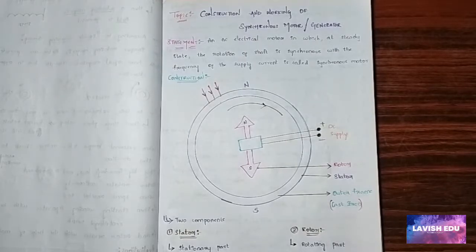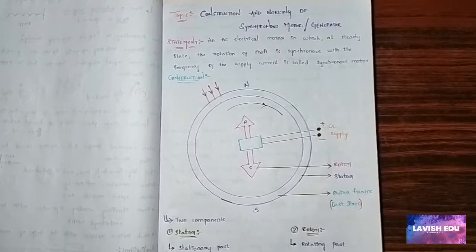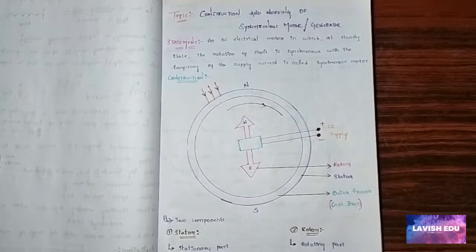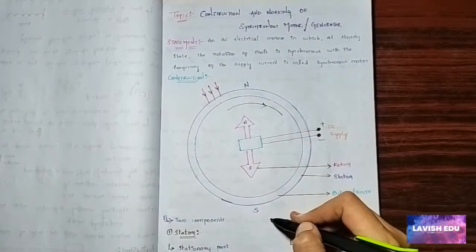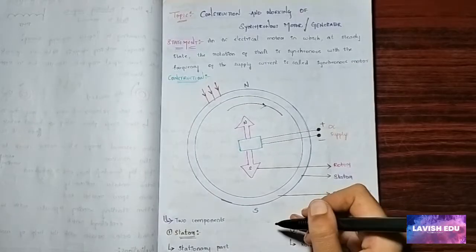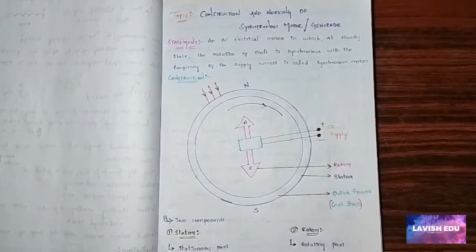There are two types of synchronous motors. One is salient pole synchronous motor and the other one is non-salient pole synchronous motor. If they ask in a question what are the different types of synchronous motor, then you should give these two points.